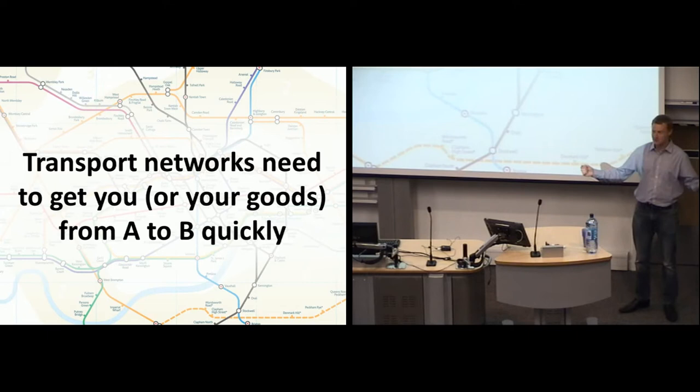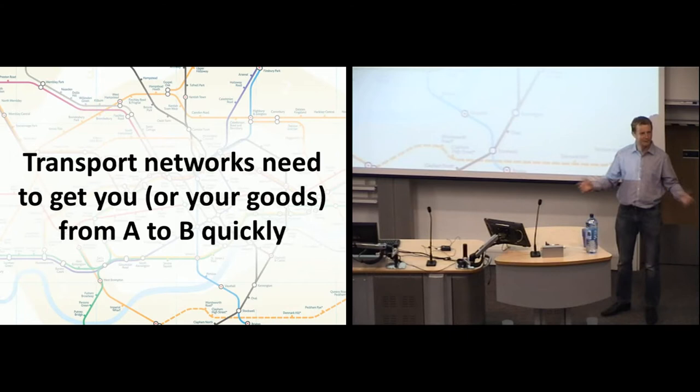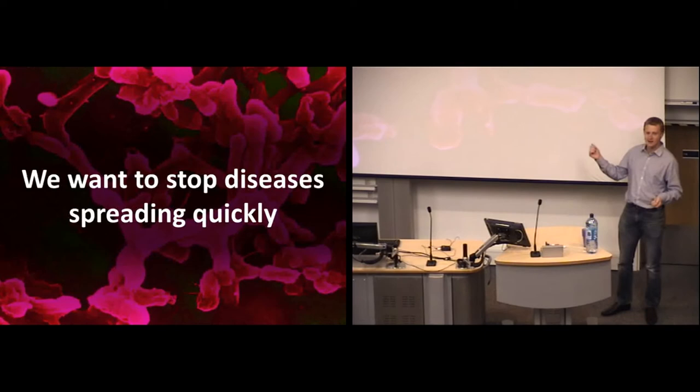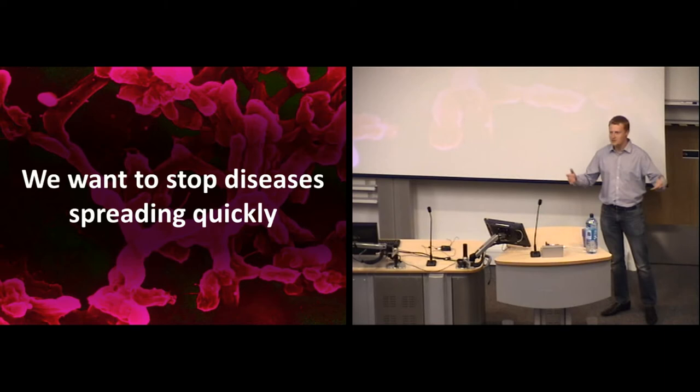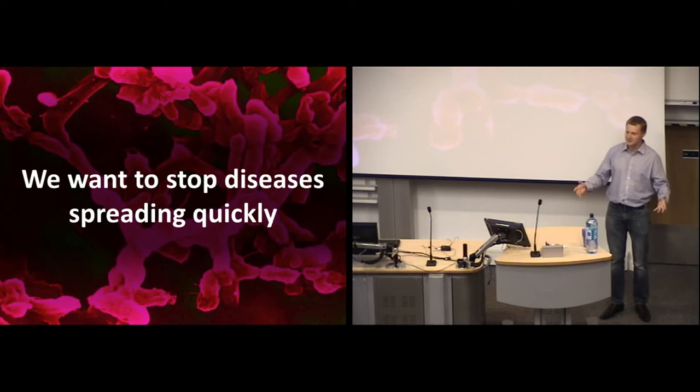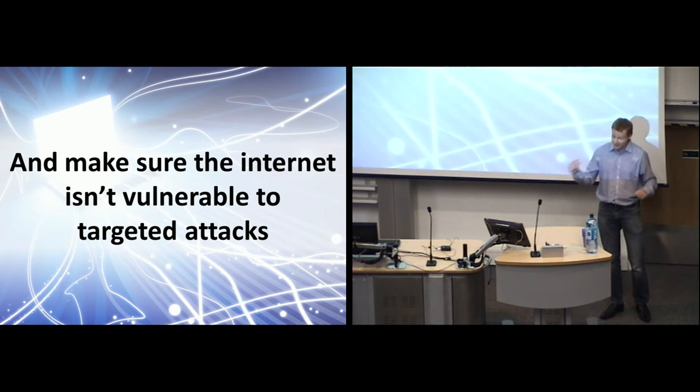Examples of networks: transport networks — you want to get from A to B as quickly as possible, and so does everyone else. We can create a network out of this and we want that network to be as efficient as possible. Other examples include disease networks. If you're ill, maybe it's contagious and you come into contact with some people, and those people come into contact with some other people, and so on. That's a network, and one we want to keep as small or disconnected as possible.